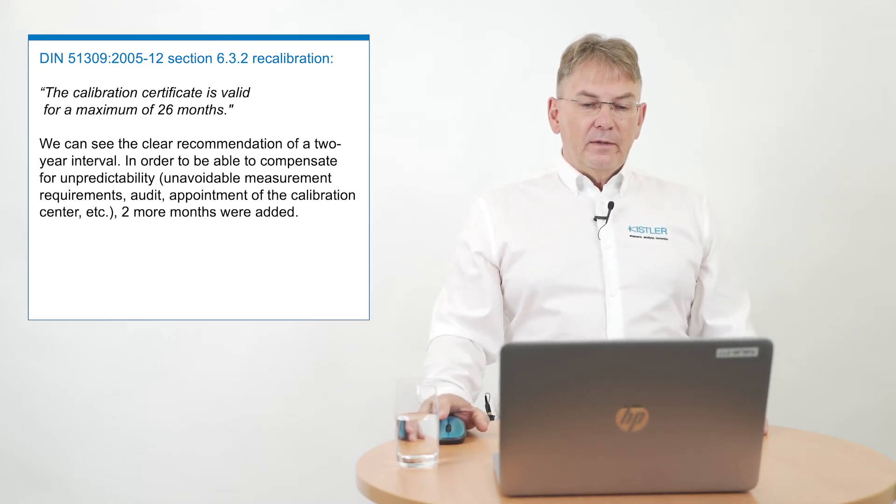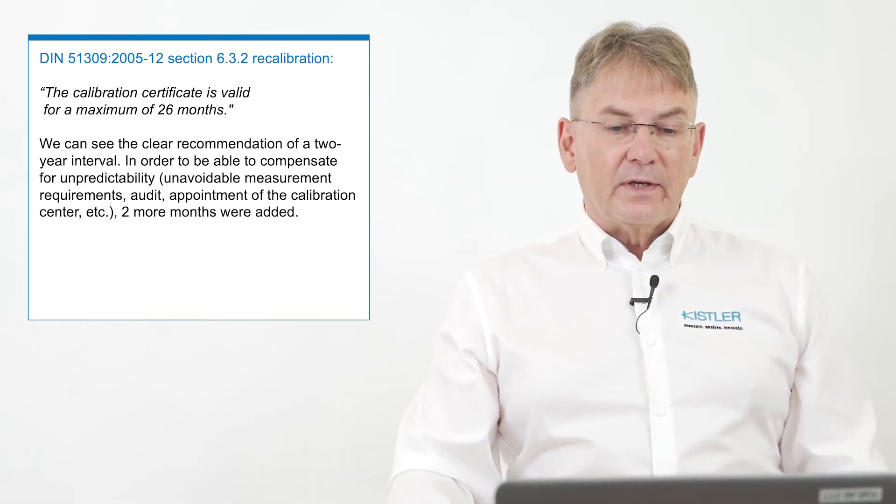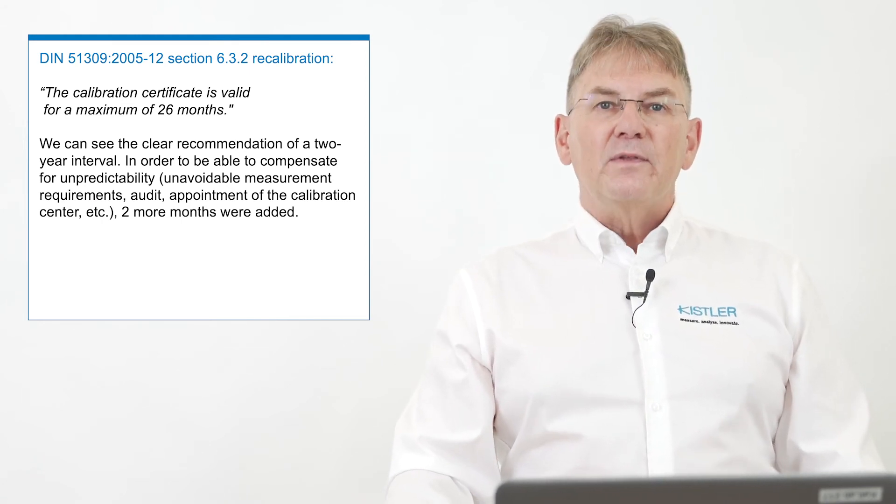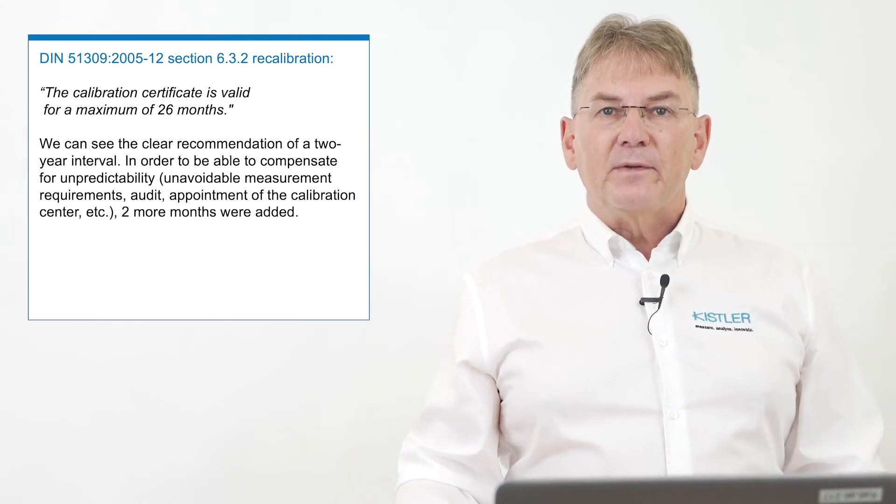People writing norms found out that some customers choose those extreme long intervals of 6 or 8 years. As mentioned before, that doesn't make sense. So what they did is they limited the validity of calibration certificates — not the calibration intervals, but the validity of calibration certificates. Up to 26 months is a very common limit: 24 months plus 2 months for shipping and handling. You as the instrument holder are still responsible for the calibration intervals, but these norm writers limit the certificates. For example, DEAN 51309 in section 6.3.2 on recalibration states that the calibration certificate is valid for a maximum of 26 months — forcing customers to a good interval of about 24 months.